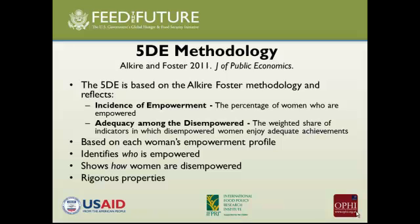In poverty we look at the intensity of deprivations among the poor. Now we are looking at one minus that — the adequacy that disempowered people nonetheless have sufficiency in. It's based on each woman's empowerment profile and identifies who is empowered and how women are disempowered. The 5DE methodology only covers women — it doesn't cover men. It covers all women, whether they are from female-only households or from married households.